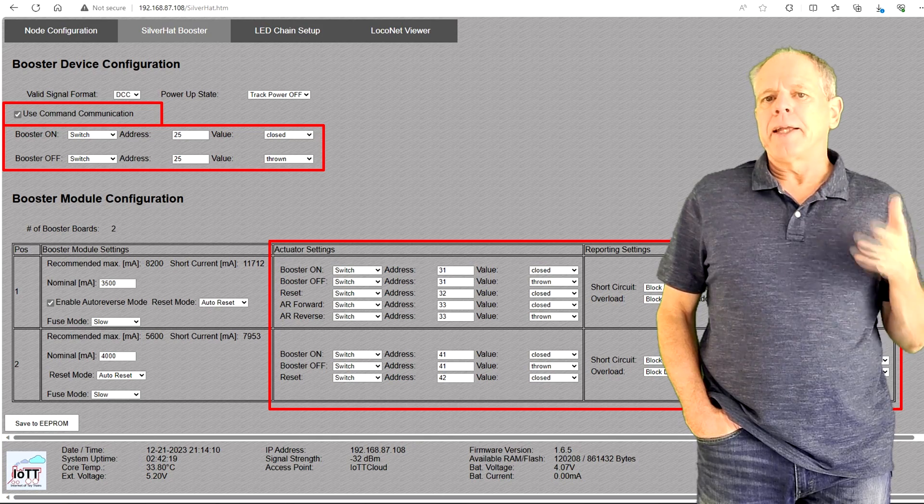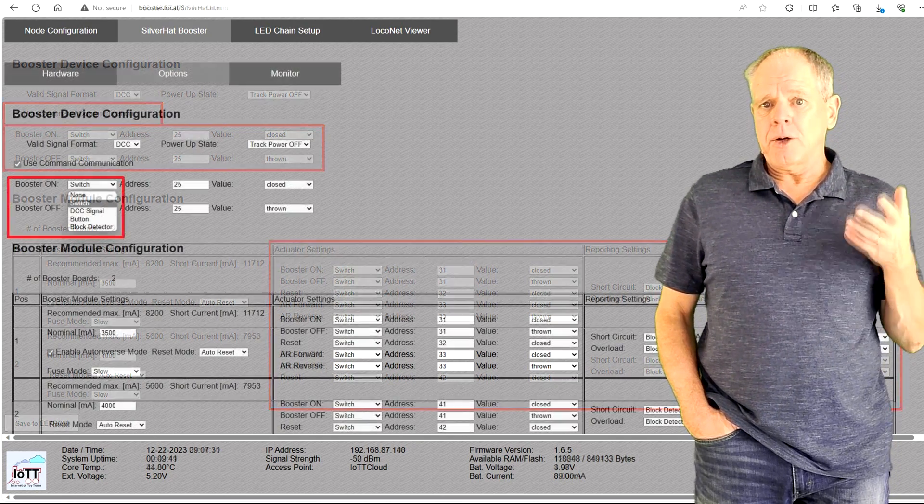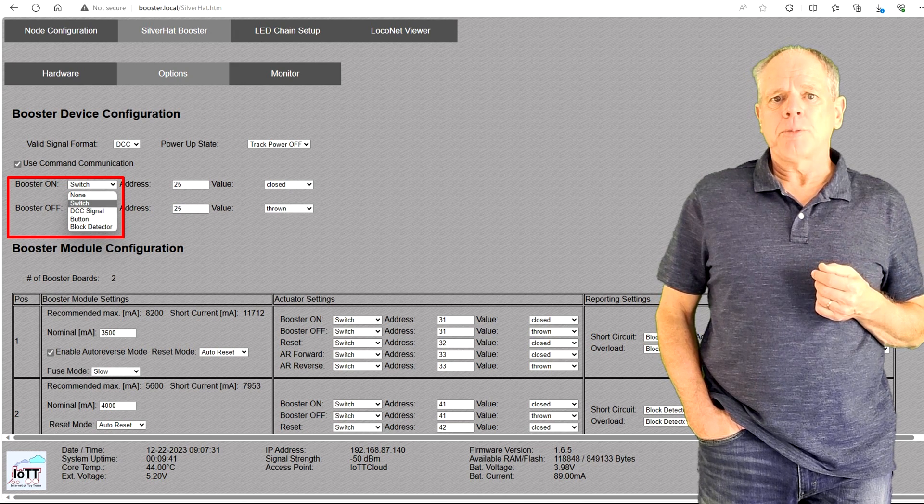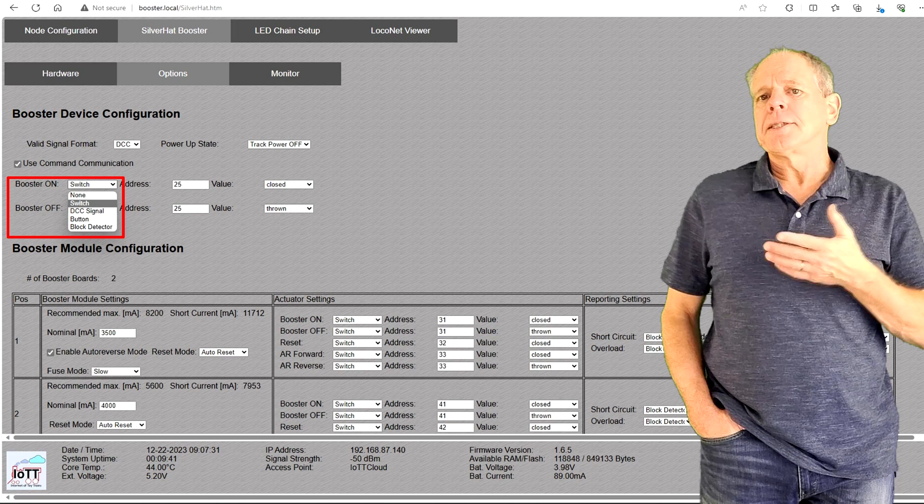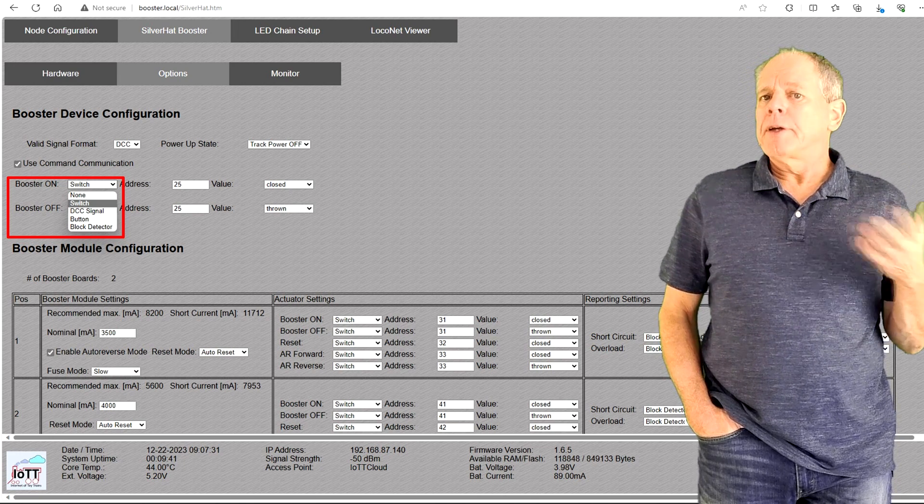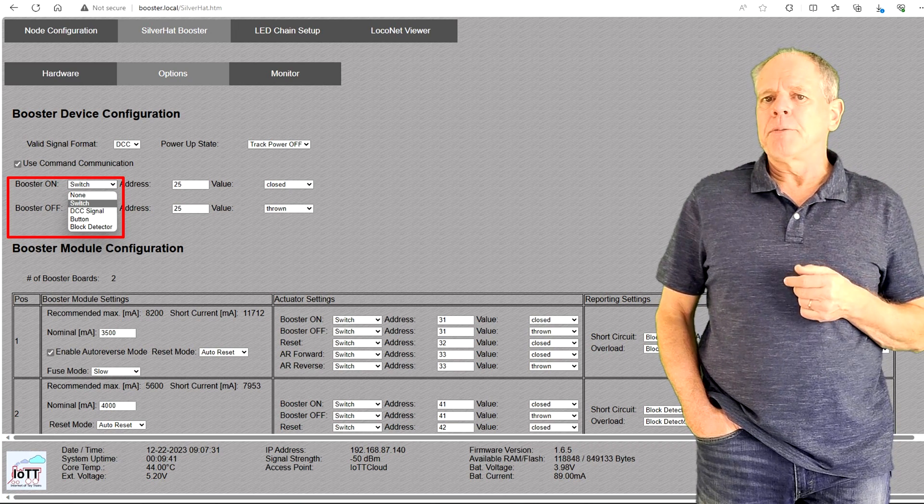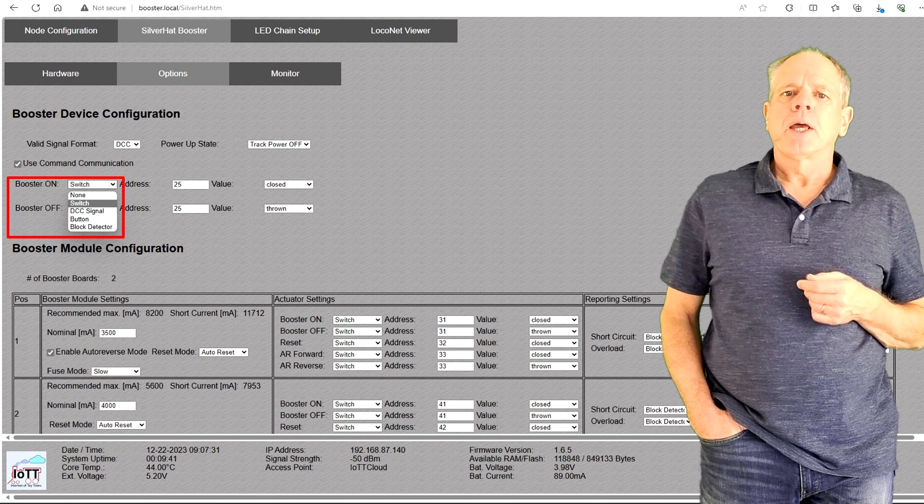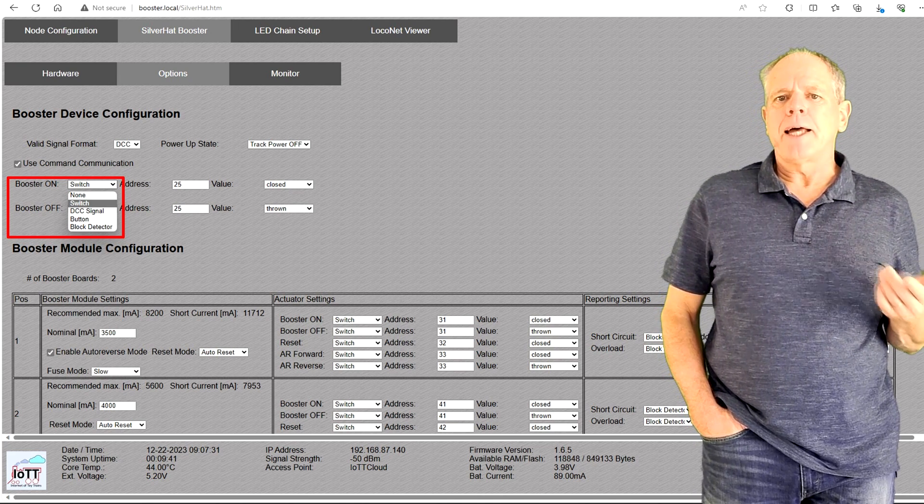Then activate the Use Command Communication checkbox if you want the booster to respond to commands from the command station. If activated, additional options are displayed. The first is a command to switch the track output ON and OFF. If the booster is connected to DCC, you can use any switch or signal command. When connected to LocoNet, you can also use block detector input and button commands. Note that ON and OFF can use different command types and addresses.